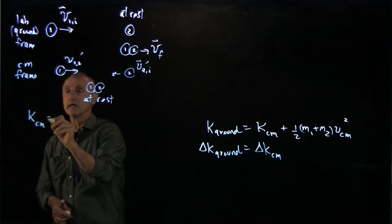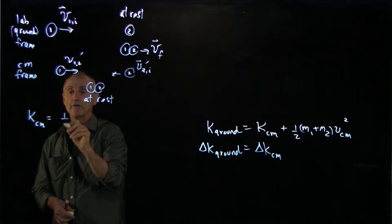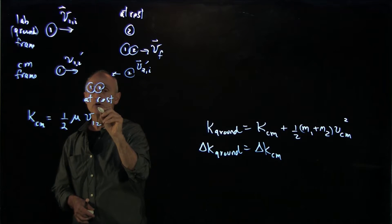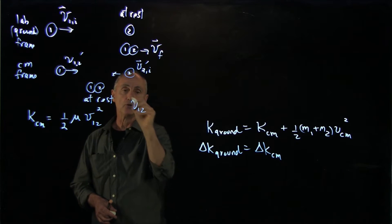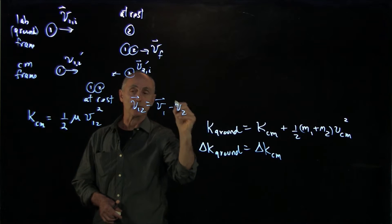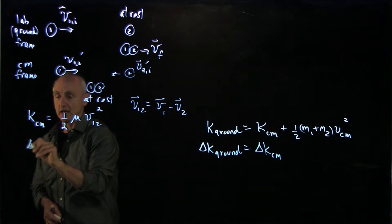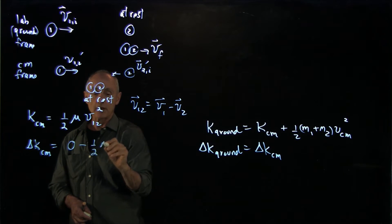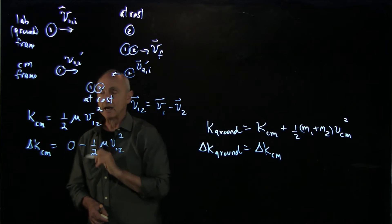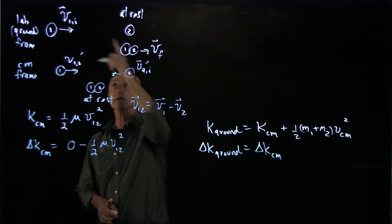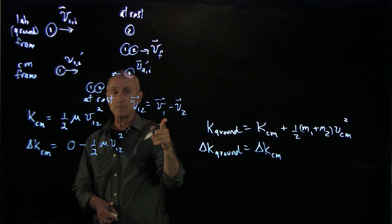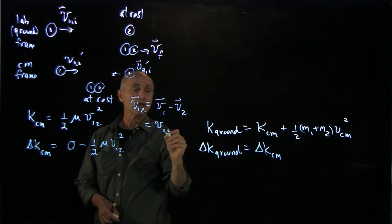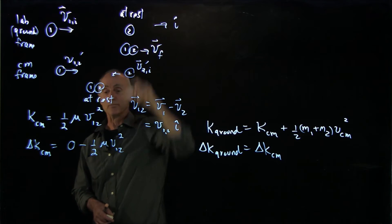Remember, v12 was equal to v1 minus v2. The change in kinetic energy in the center of mass frame is the final kinetic energy, which is 0, minus 1 half the kinetic energy in the initial state. What is this quantity initial? Well, this was a reference frame independent concept. So we can just look at the lab frame and write this as v1 initial i hat, because this object is at rest.